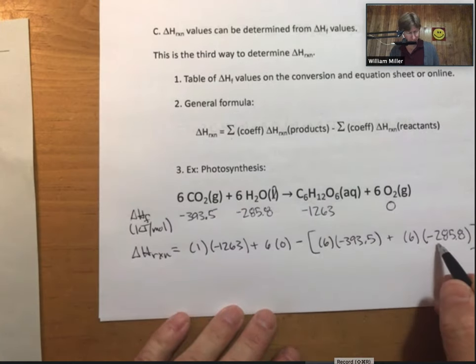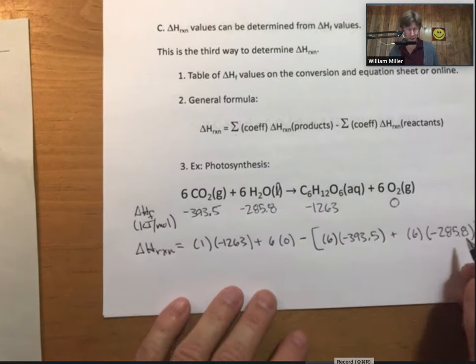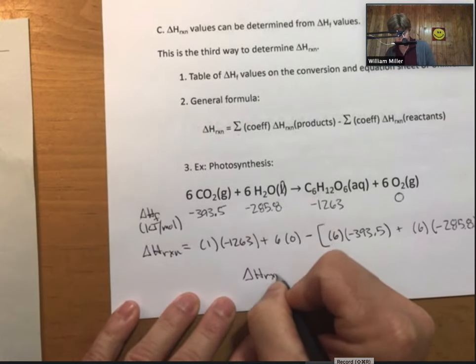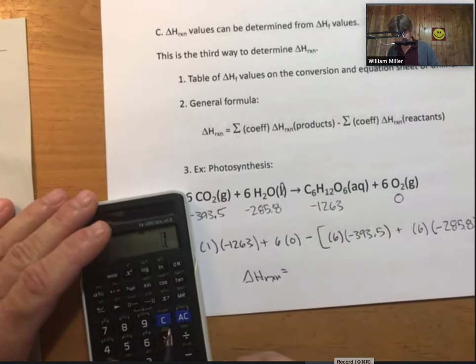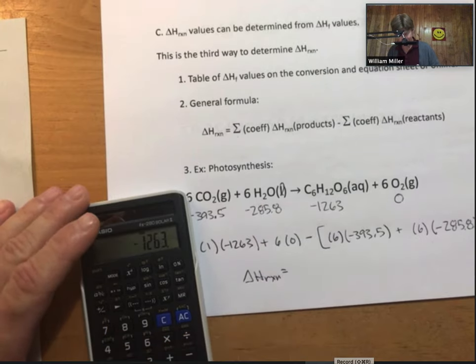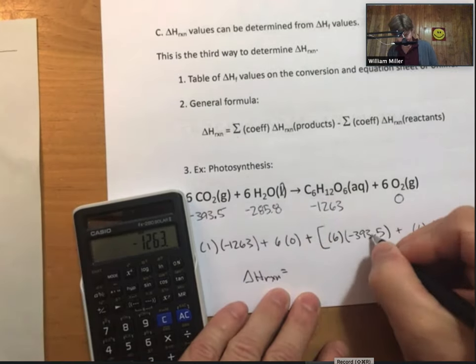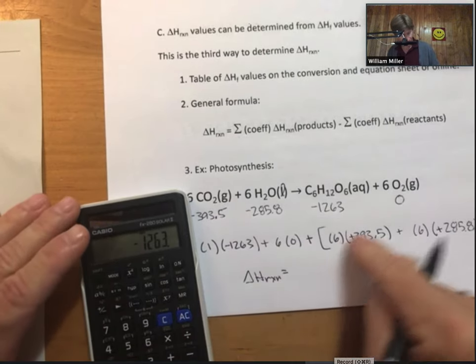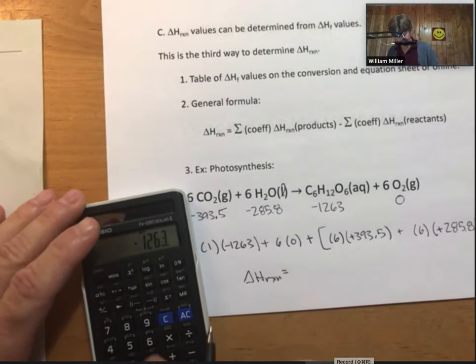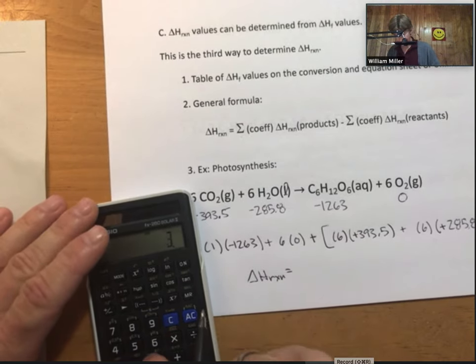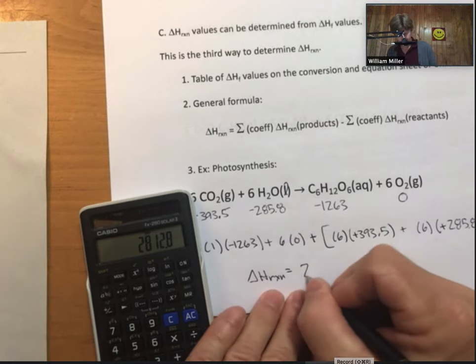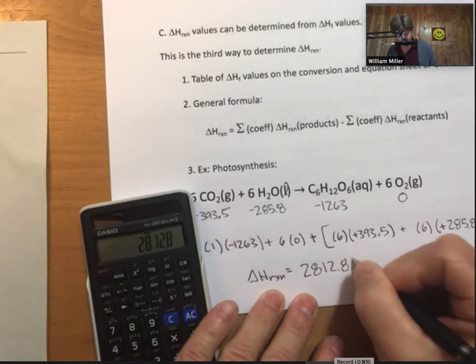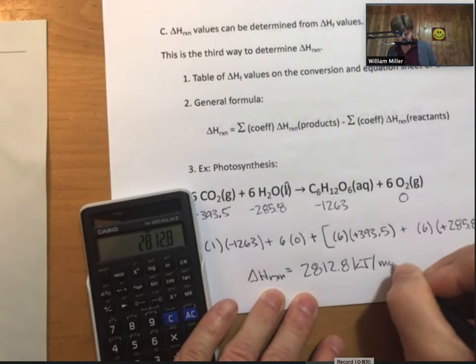So, this time it's going to be minus six times the value for my H2O, my water. These are going to be double negatives. So, these will end up being positive terms. And when we calculate this out. So, 1263 minus, I'm just going to do plus. So, all of these are positive now. So, plus six times 393.5, plus six times 285.8, and I get 2812.8 kilojoules per mole.